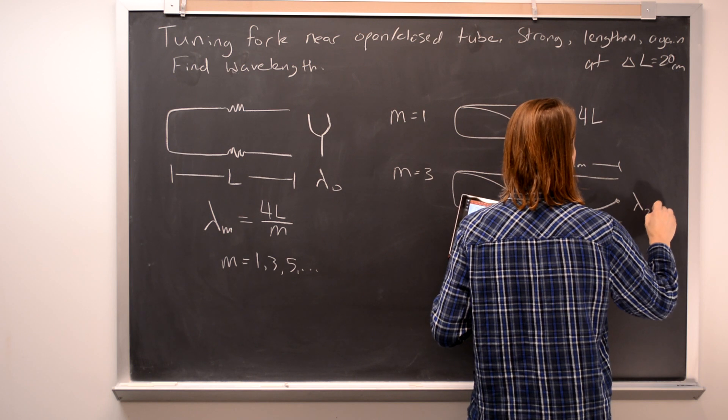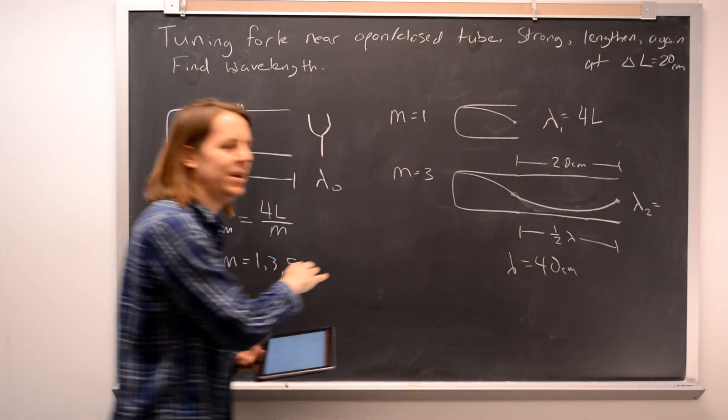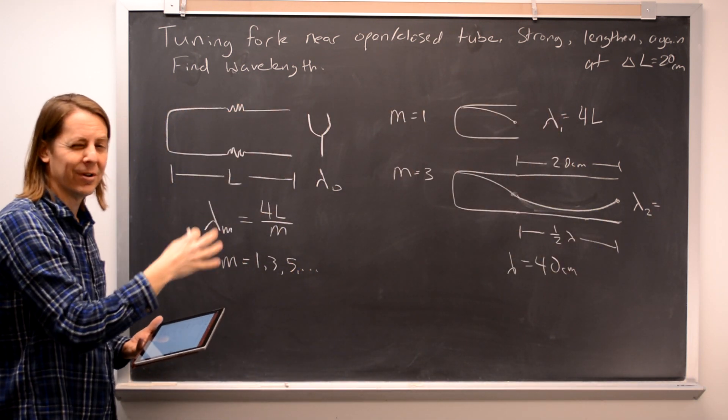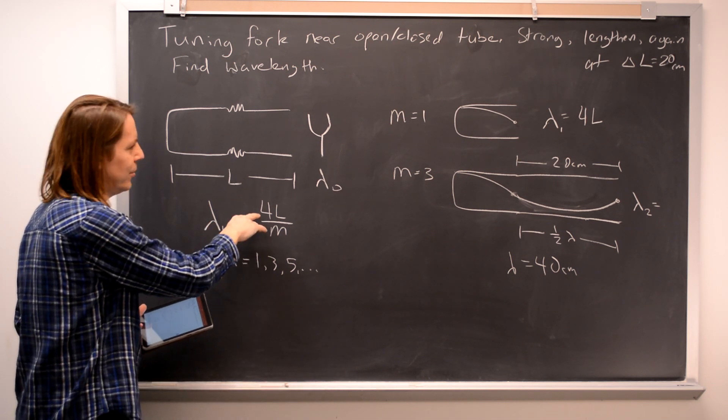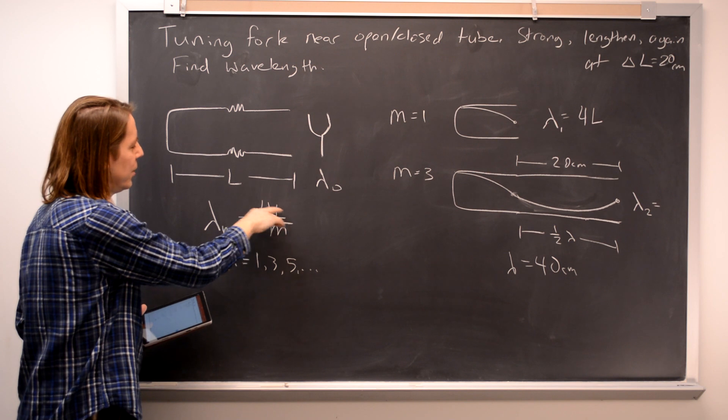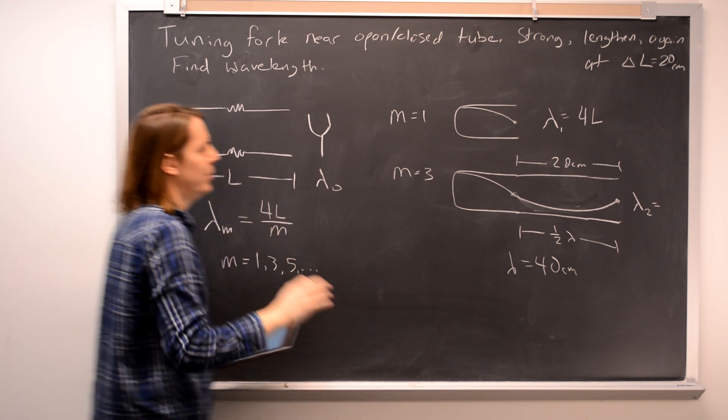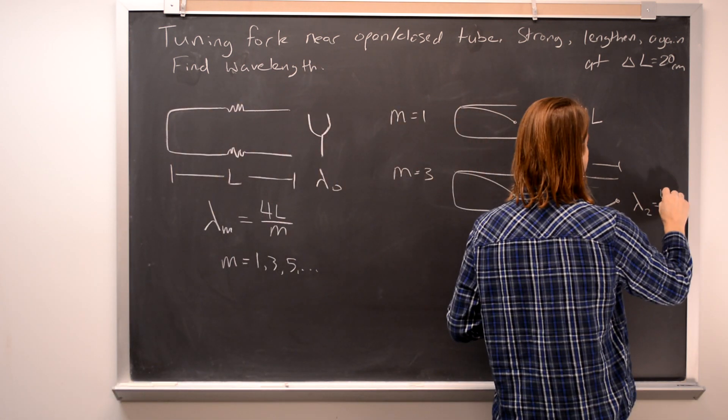And it's confusing, I don't know what I'm going to call it, lambda 2 when m equals 3. Remember, that's just counting the modes. That's confusing. Right, so lambda 2 is 4L over 3.